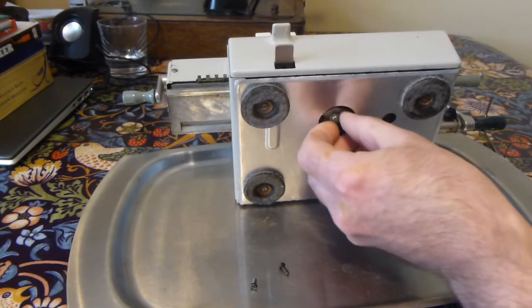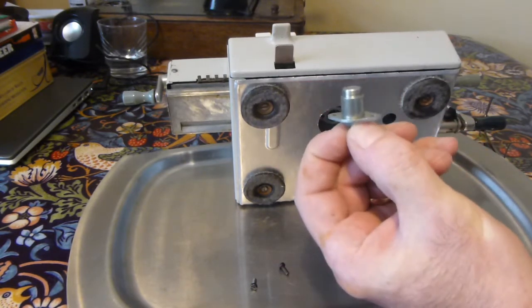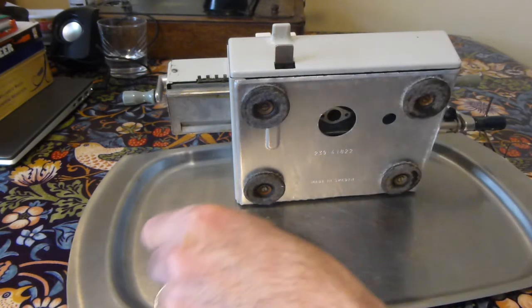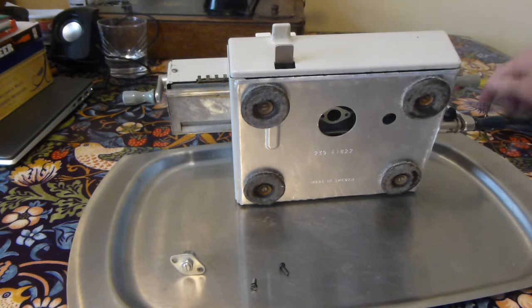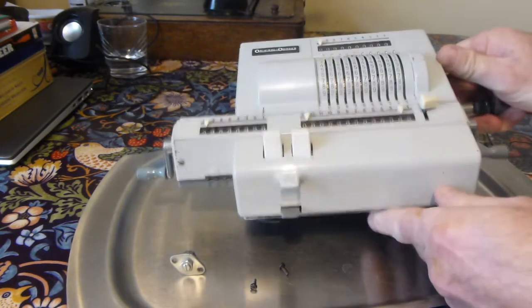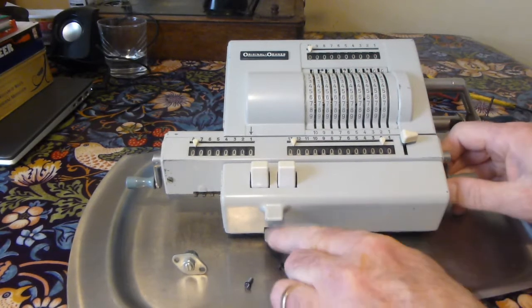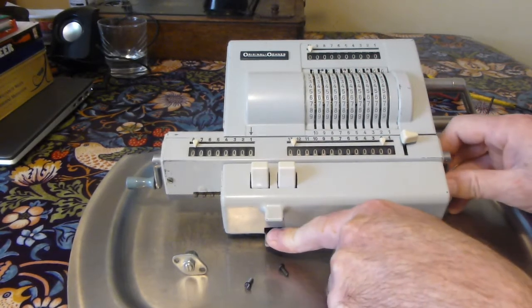With both screws removed you ought to be able to just pull the plug out which limits the travel of the carriage, and you ought to be able to just extract the carriage with the carriage release lever down and extract it to the right and out it comes.